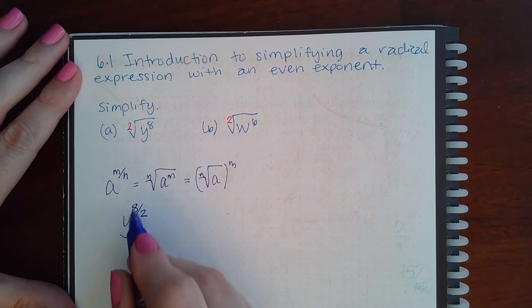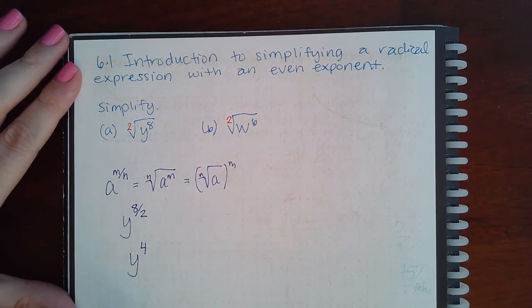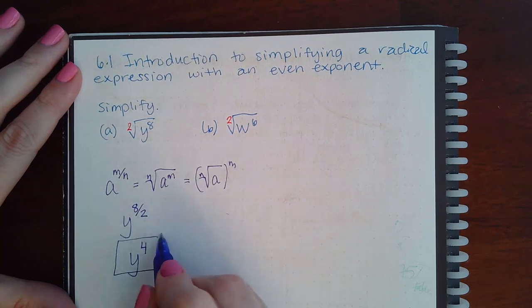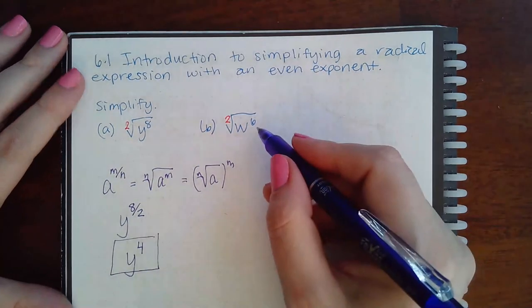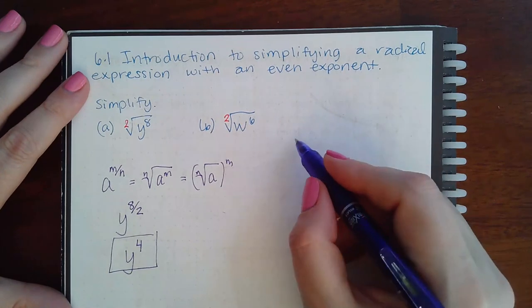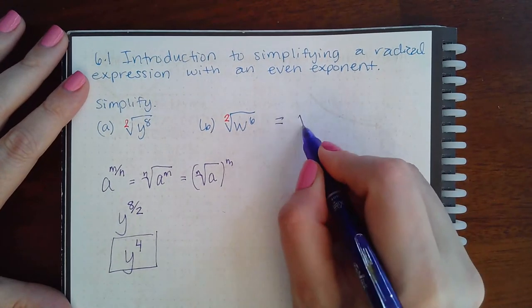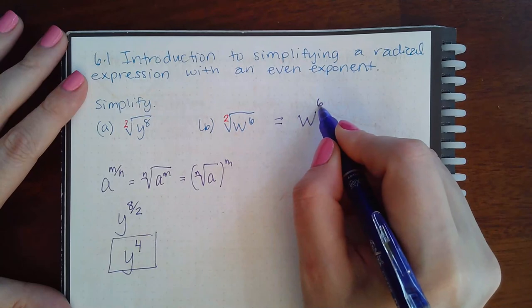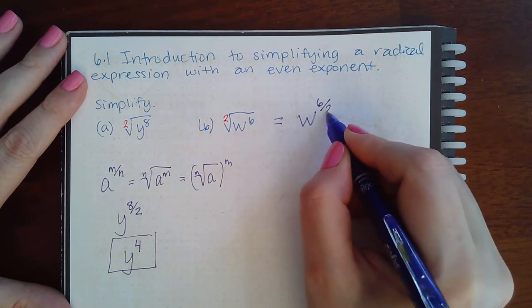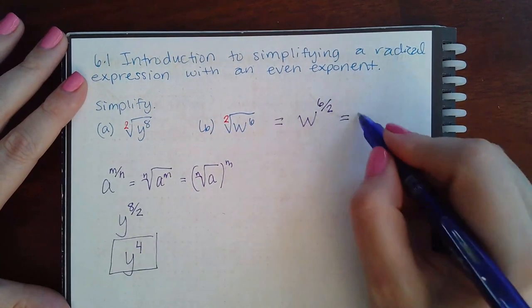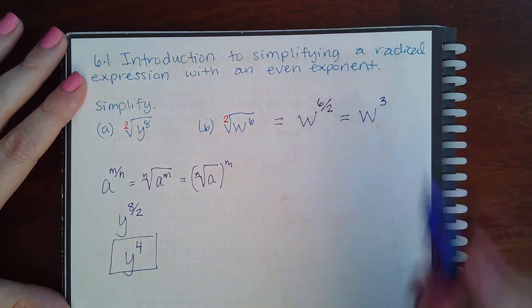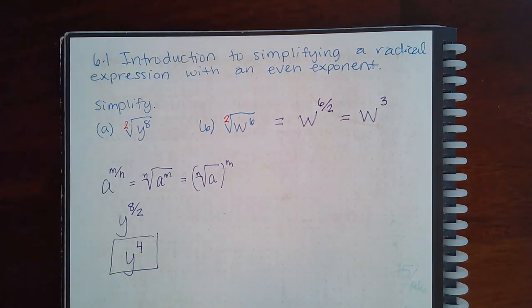So I get 4 for this response. Now the same thing here, I can apply my rule. So I can convert that into w, my base. Exponent is the numerator, index is the denominator. If I simplify that fraction, I get w to the third power. Getting practice with this rule, this exponent rule, will also help us with many topics further along.